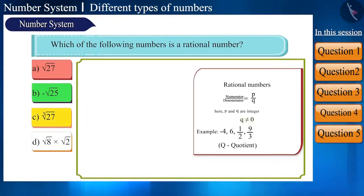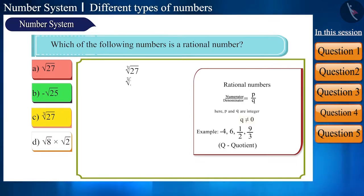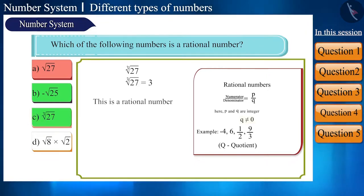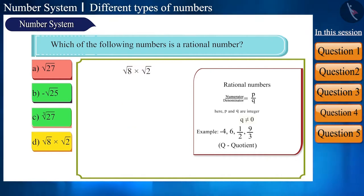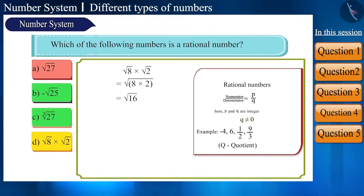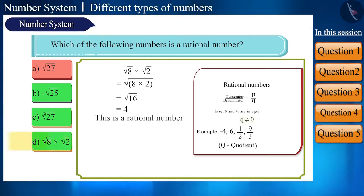Let's move to the next option: cube root of 27. Here we are asked the cube root and not the square root. The cube root of 27 is 3, which is a rational number — always pay attention to whether it is a cube root or square root. Now the last option: √8 multiplied by √2. The square root of 8 and the square root of 2 are both irrational numbers. But we can write √8 × √2 = √16, which is 4. Thus, it is also a rational number.